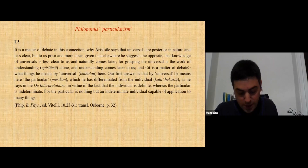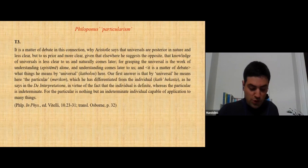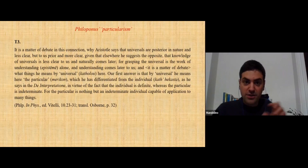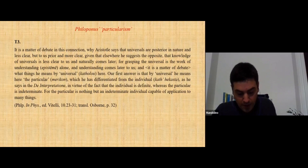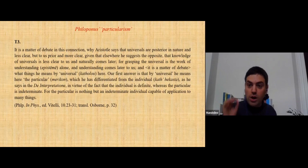However, interestingly, although one may recognize the reference to chapter 7 of the De Interpretatione, the distinction as such is not found there. Indeed, in that passage, Aristotle distinguishes between katholou and kath'hekasta, that is, between universals and individuals, but there is no threefold distinction and there is no merikon, no particular. Philoponus' commentary then defines the particular as nothing but an indeterminate individual capable of application to many things. Therefore, the term universal is here interpreted as individual, namely as the individual qua indeterminate.